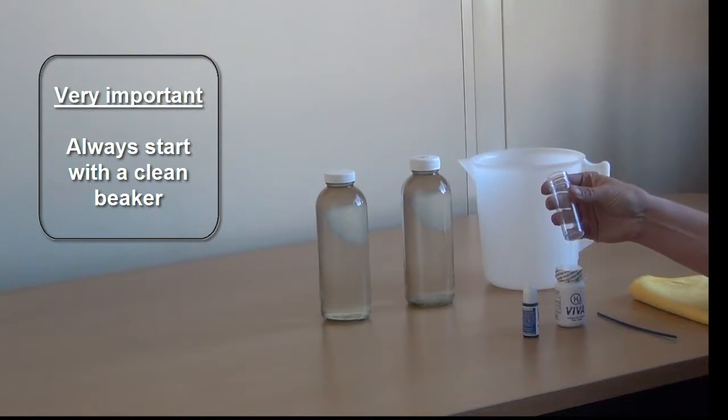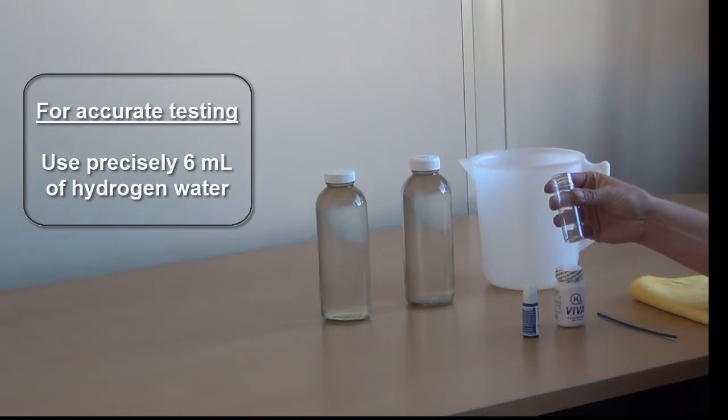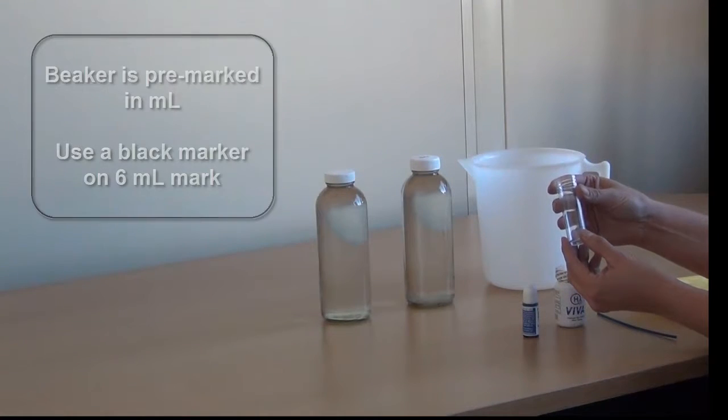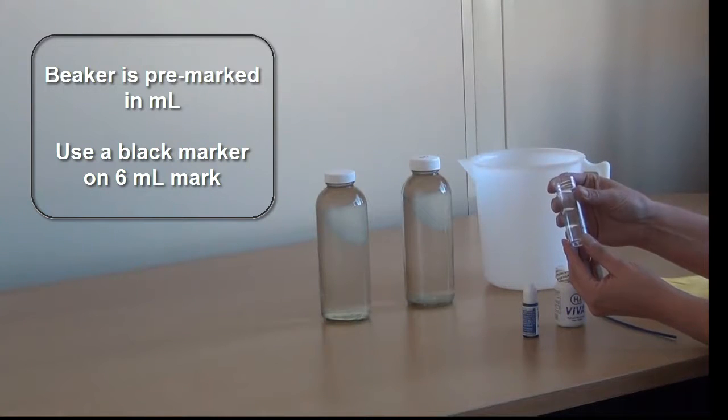You will need to use precisely six milliliters of hydrogen water for testing. We recommend making a mark on the beaker at the six milliliter level with a pen or a marker so that you can more easily see the level at six milliliters.